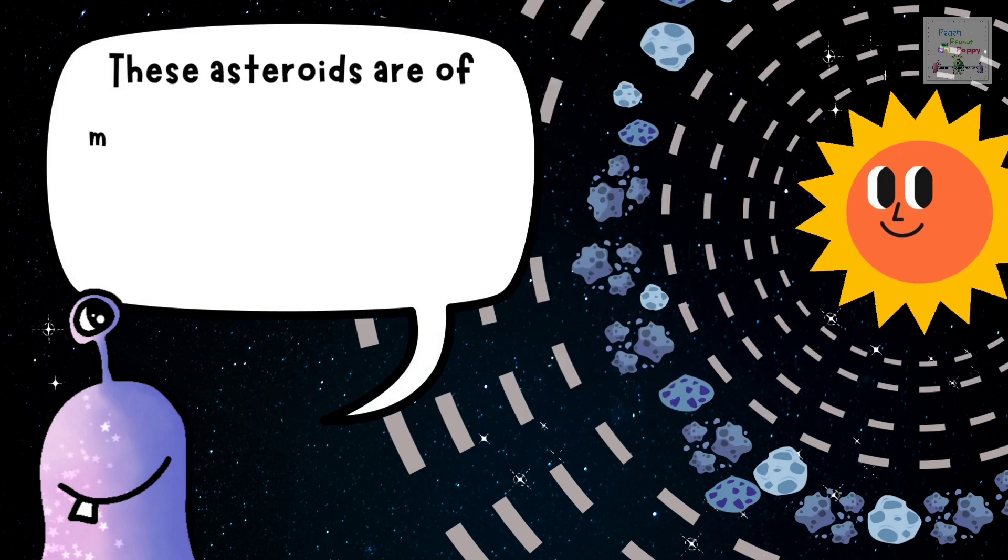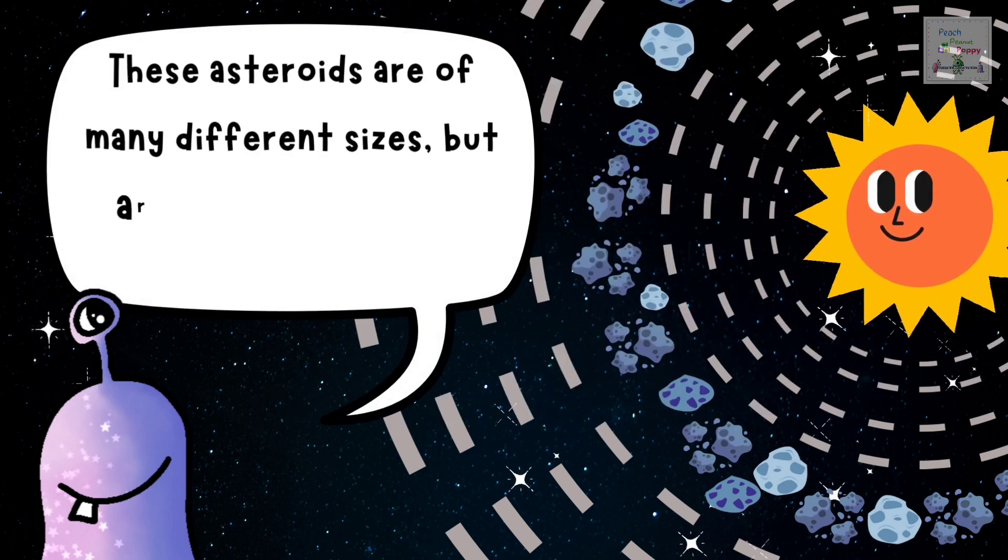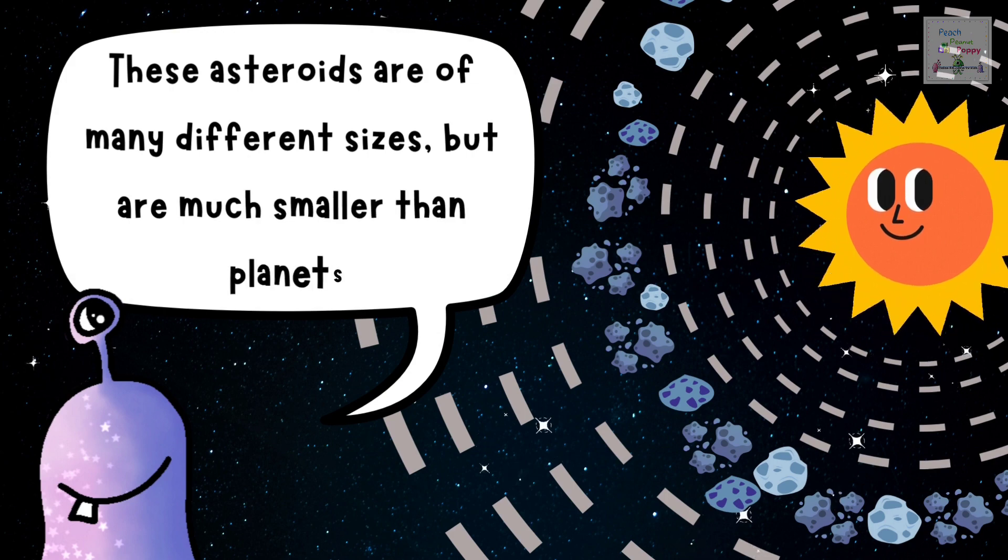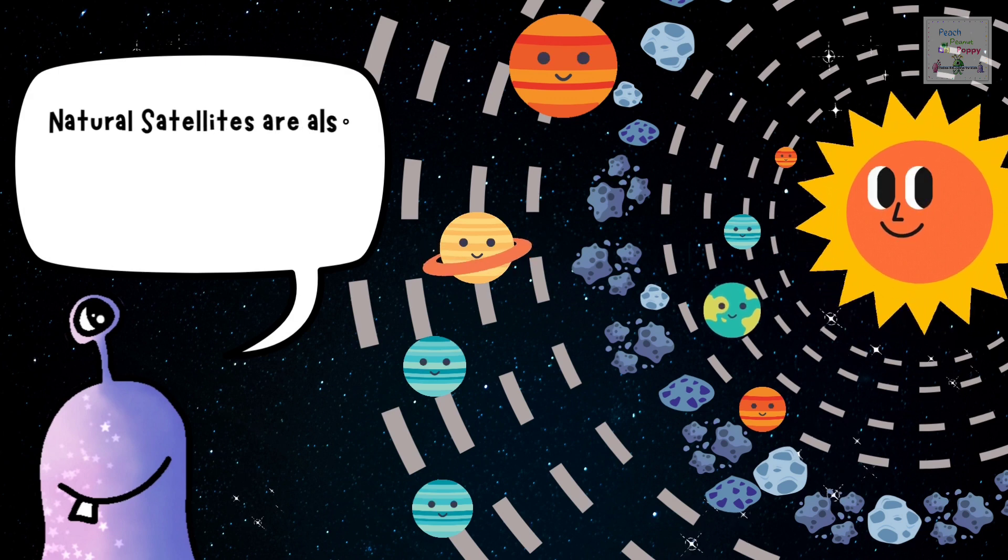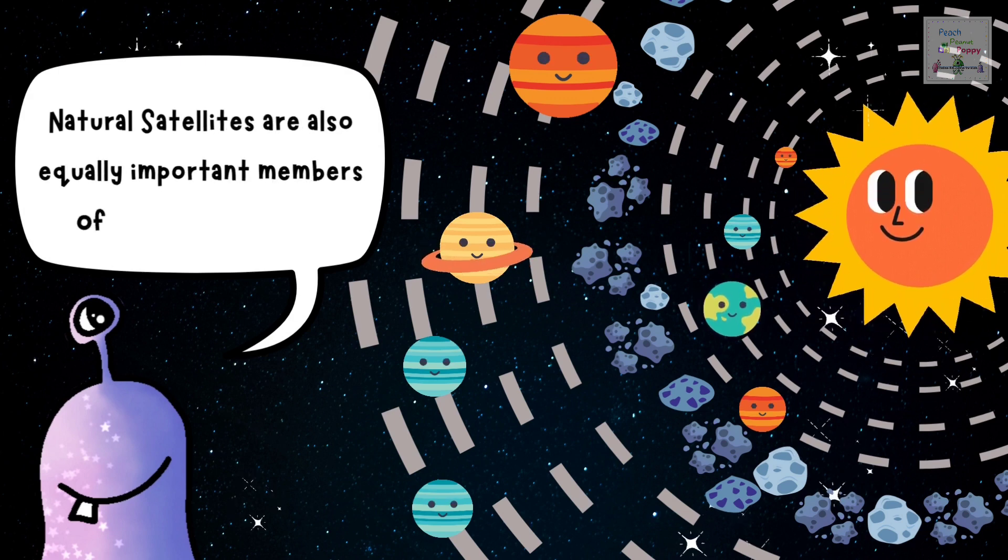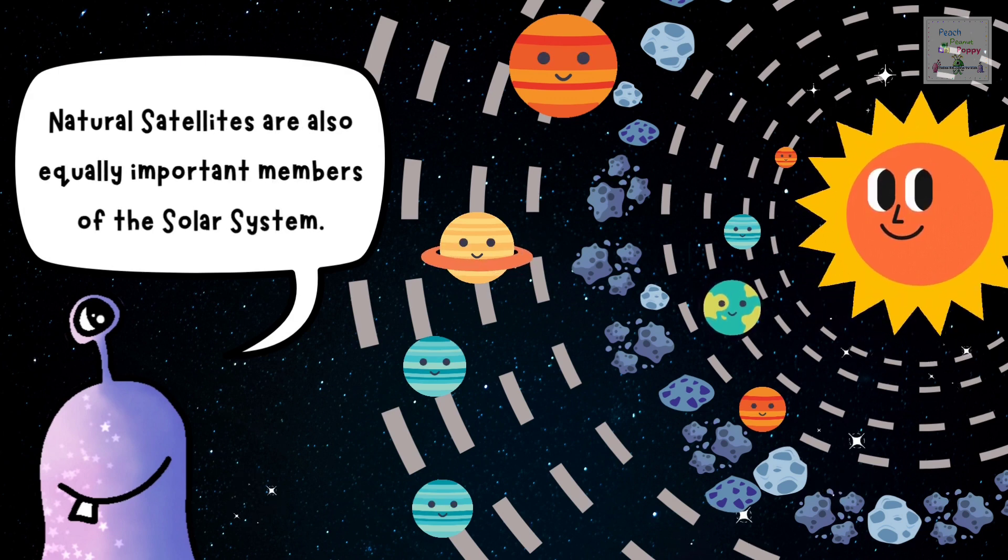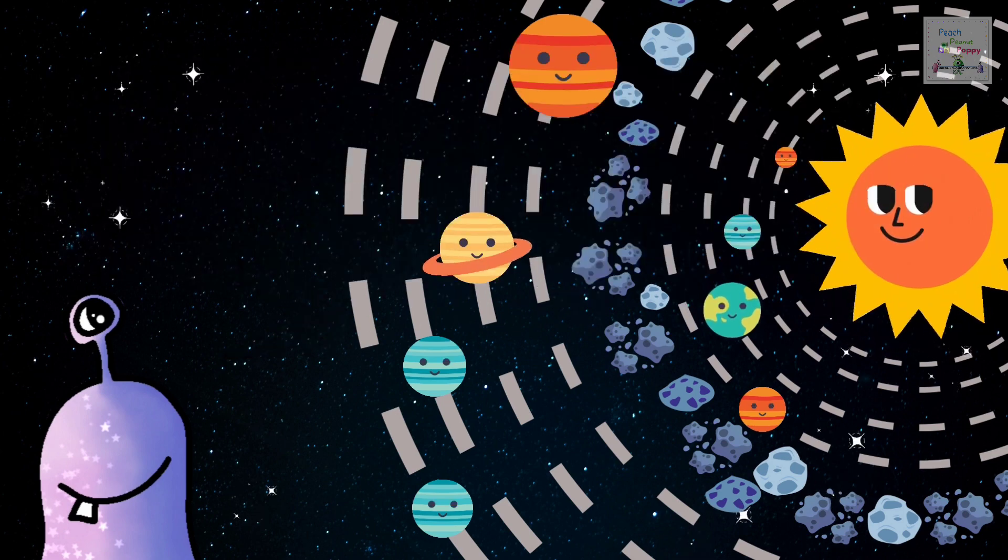And these asteroids are of many different sizes, but are much smaller than the planets. Now moving on to the natural satellites, which are also equally important members of the solar system. So what is a natural satellite?